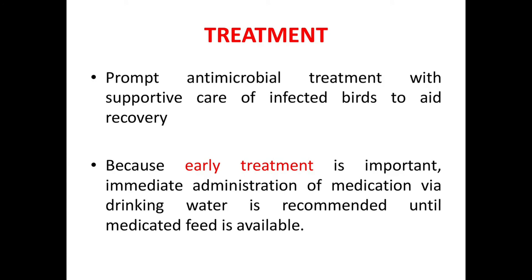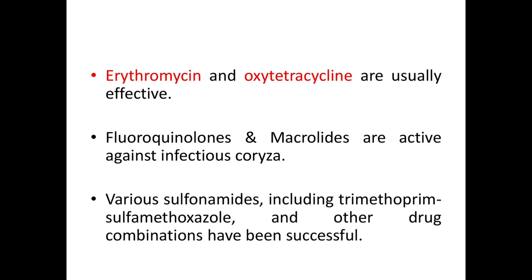For treatment of Infectious Coryza, prompt antimicrobial treatment with supportive care of infected birds is recommended to aid recovery. Because early treatment is important, immediate administration of medication via drinking water is recommended until medicated feed is available. Erythromycin and oxytetracycline are usually effective. Fluoroquinolones and macrolides are active against Infectious Coryza. Various sulfonamides including trimethoprim-sulfamethoxazole and other drug combinations have also been successful.